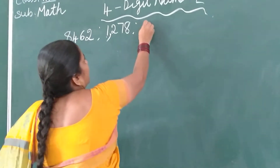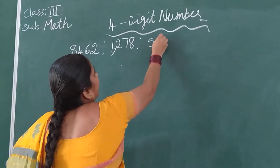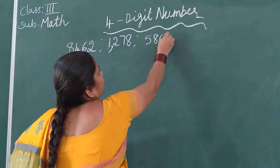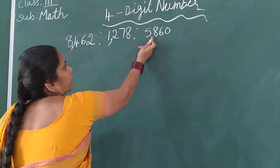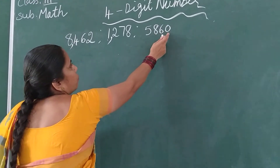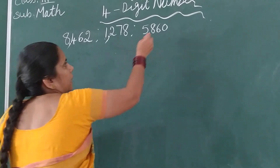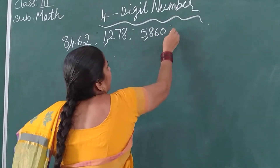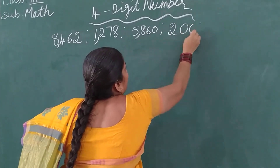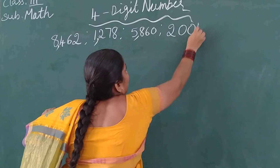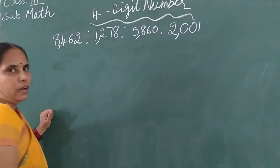And one more number: 5, 8, 6 and 0. Here also, after 3 digits — 1, 2, 3 — you will put the comma. And one more number: 2, 0, 0 and 1. After 3 digits, you will put the comma.